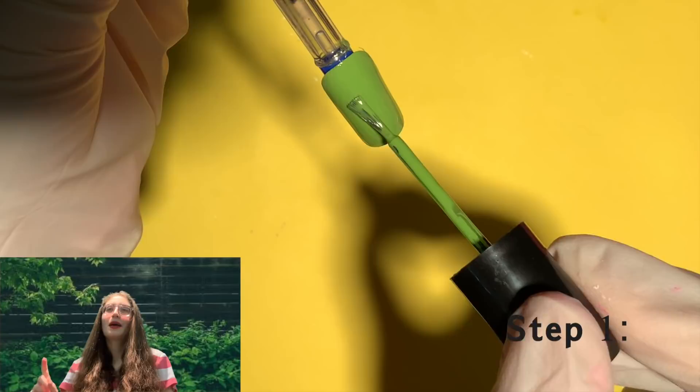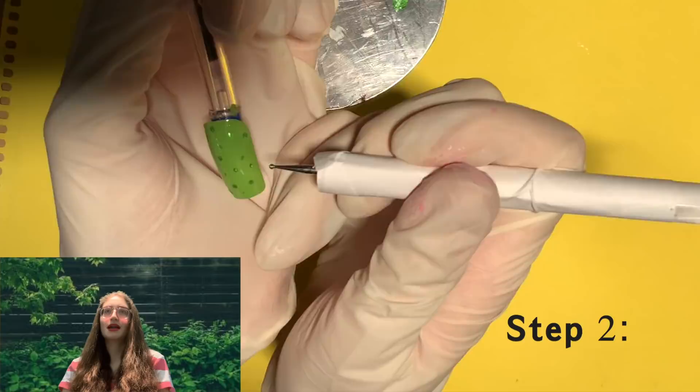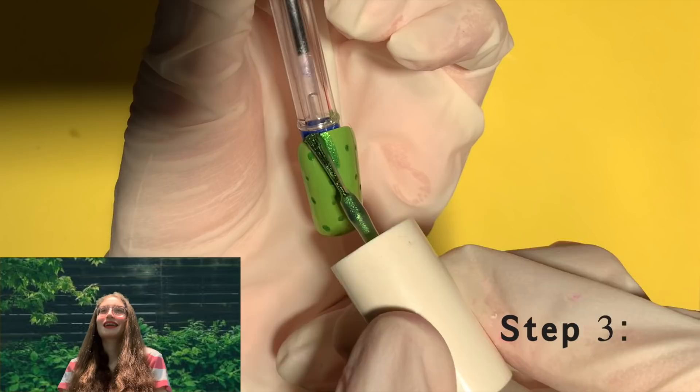Step one, paint light green background with nail polish. Step two, using a small dotting tool dipped in medium green polish, put small dots all over randomly. This is optional, it's okay if you skip it.